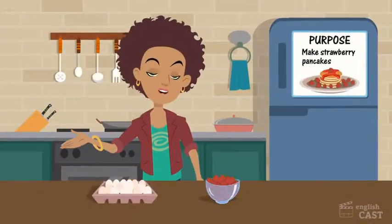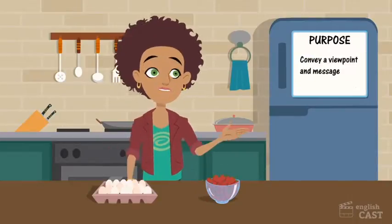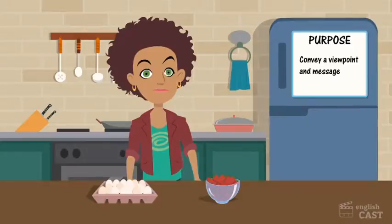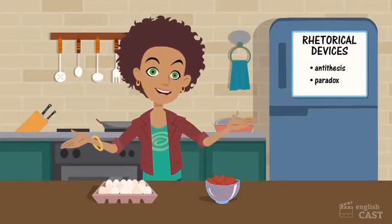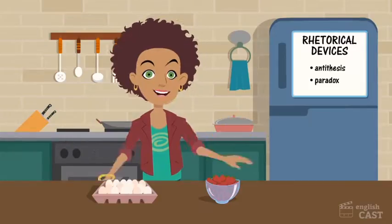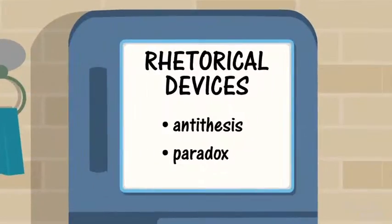Writers do this, too. They take seemingly opposing ideas and use them to develop their viewpoint and message for a specific purpose. Antithesis and paradox are two of the rhetorical devices writers can use. Let's take a look at how Anna Quinlan uses antithesis and paradox in her essay, A Quilt of a Country.